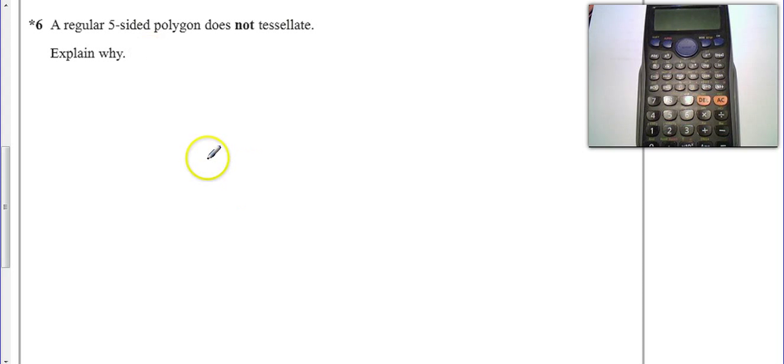Now, I'm going to attempt to draw a pentagon. There we go. First of all, I've got a pentagon there, and it's a regular pentagon because it says so in the question, a five-sided polygon, and then I need to remember a couple of things.